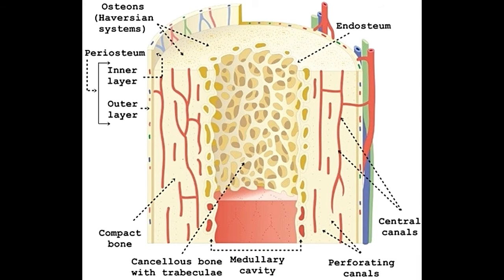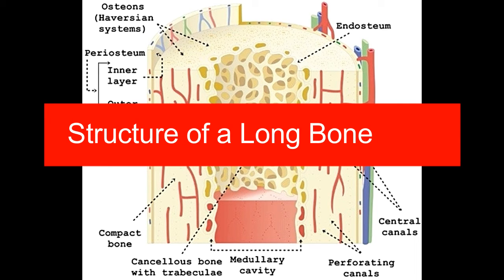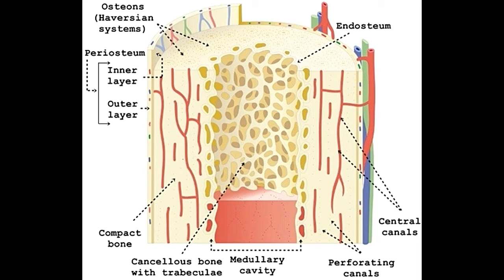Only compact bones have osteons as a basic structural unit; spongy bones don't have osteons. With the exception of the kneecap, wrist, and ankle bones, all the bones of the limbs are long bones. They are called long bones as their length is more than their width, and they are composed of a shaft and two ends. The osteons run parallel to the long axis of a bone.